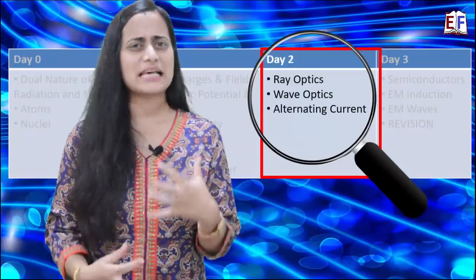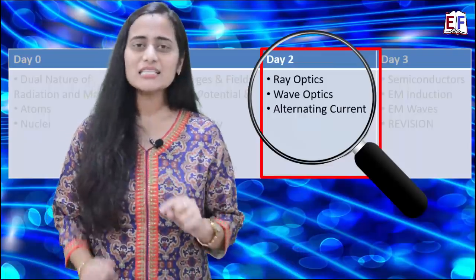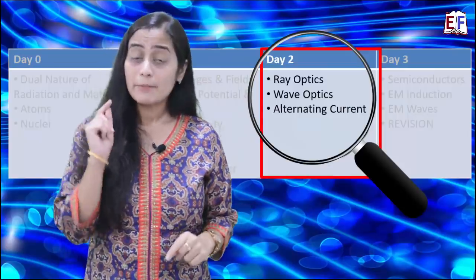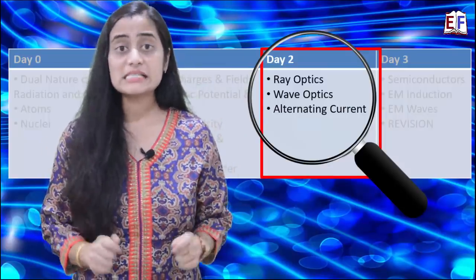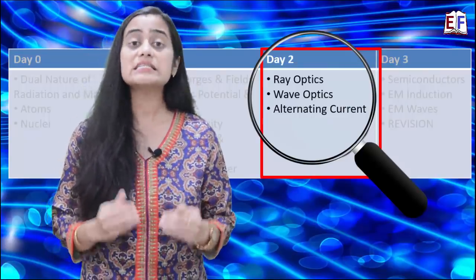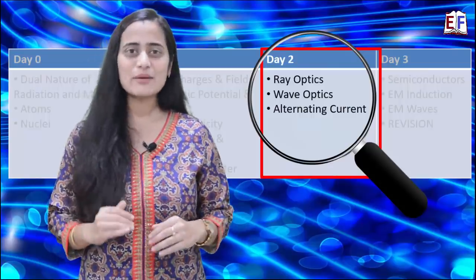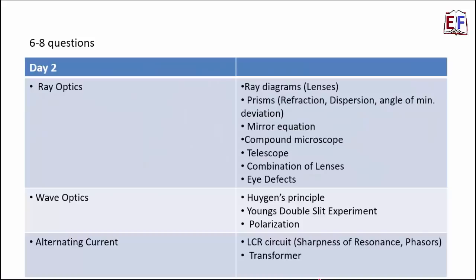Today we will study 3 lessons. Ray optics, wave optics and alternating currents. I will tell you that Ray optics is one of the most important lessons in your class 12th physics. And you will get a lot of questions. These three topics comprise 6 to 8 questions. Now, you may be wondering that on Day 2, we have just given you three chapters. That's because Ray optics is a very lengthy lesson. And it is a very important lesson. So this is like super important lesson. In fact, if you look at the entire curriculum, this is one of the most important lessons. So do not ignore it.